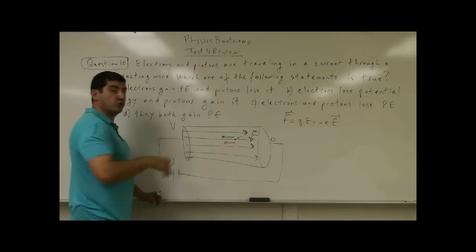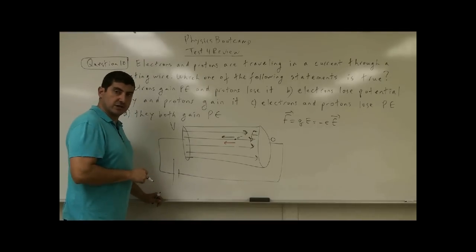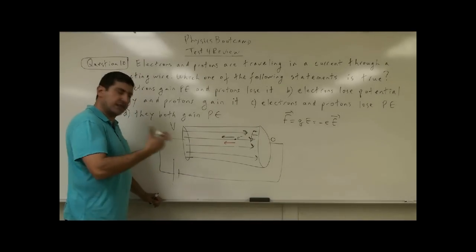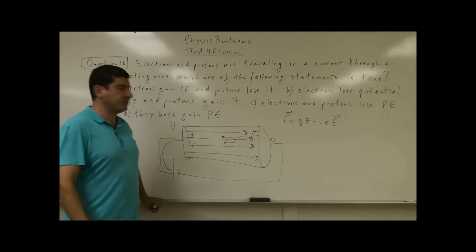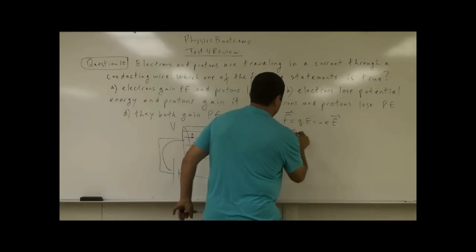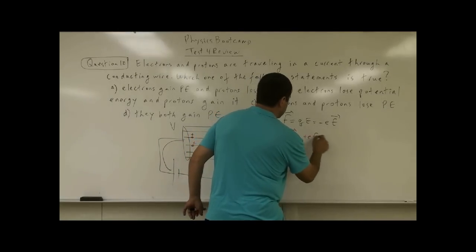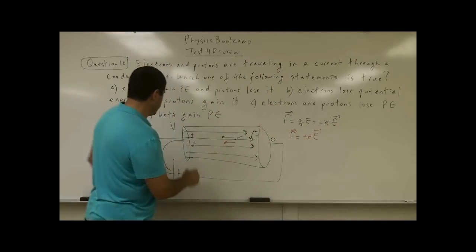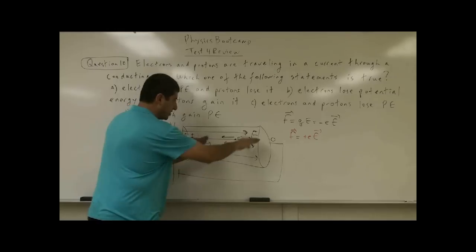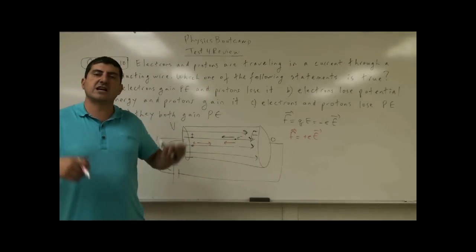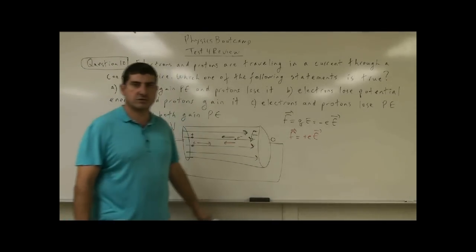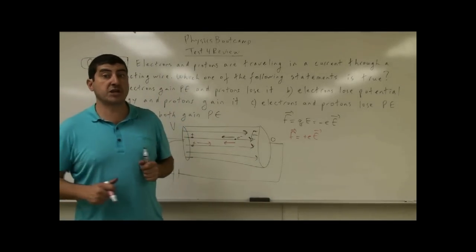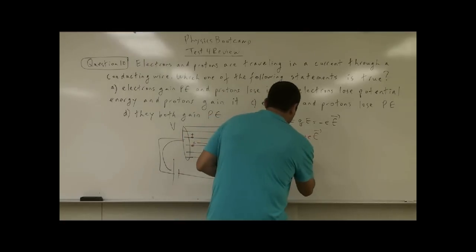Now, which way do positive charges like protons flow? If protons were actually flowing in the wire, the force would be F = qE with a positive charge, so the force would be to the right. They would move toward the lower potential side. So positive charges move from higher potential down to lower potential.